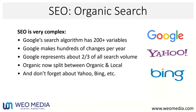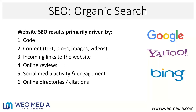If you could take those 200-plus variables and categorize them into six primary buckets, they would be: code, content, incoming links, reviews, social media, and directories. My goal is to educate you about how this stuff works, so if you're currently paying an SEO agency you'll have a better idea of what they should be doing and can ask intelligent questions — and if you're considering hiring an agency, you'll know what to look for.